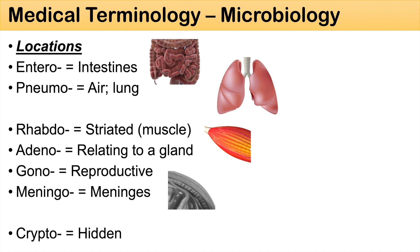Gono denotes reproductive or something with regards to the reproductive system — you can think of gonorrhea. Meningo means the meninges in the central nervous system — you can think of meningococcus. And crypto, which means hidden — you can think of cryptococcus. These are anatomical terms, but they're useful for knowing microbiological organisms like bacteria, because a lot of them are described using these anatomical locations.